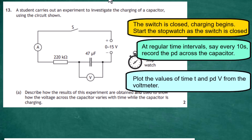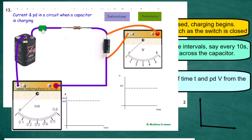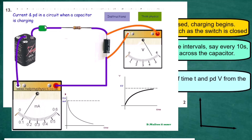Next, we construct a graph with time along the x-axis and voltage across the capacitor on the y-axis. As shown in the insert, the shape of the graph shows the voltage across the capacitor rising as it charges. This is found by measuring the voltage at certain time intervals and recording them.